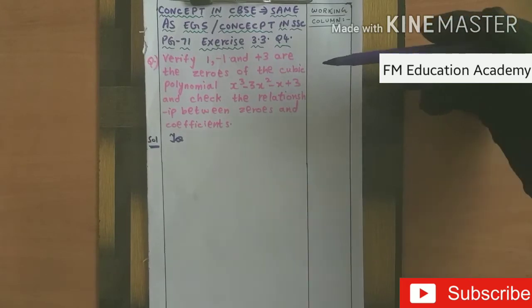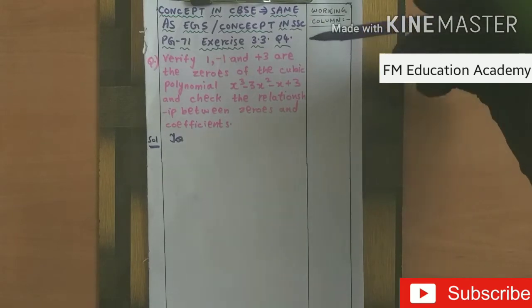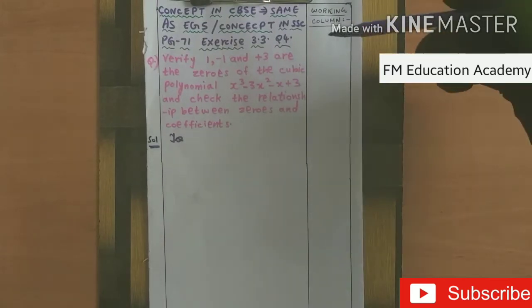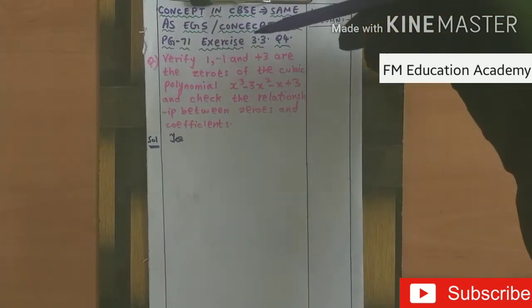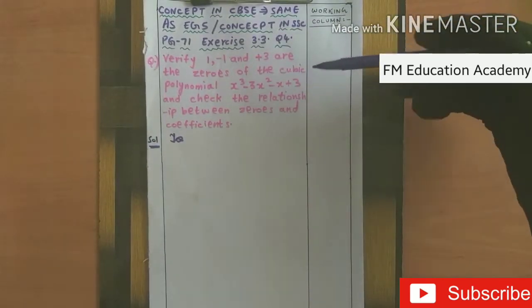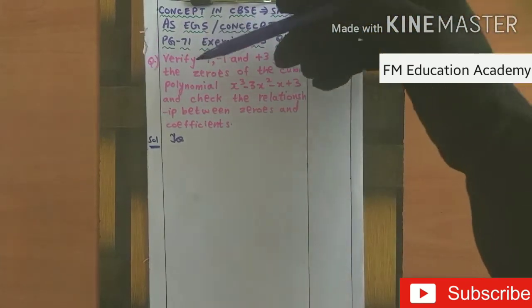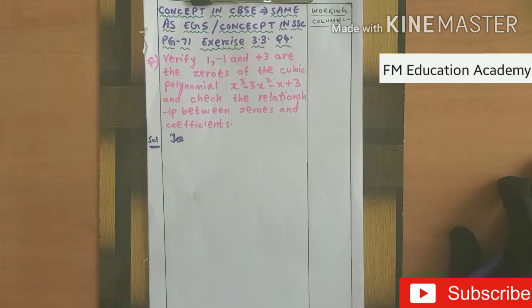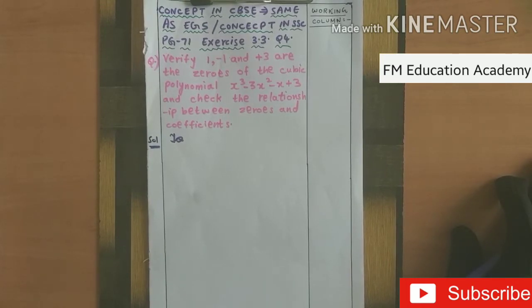When you have to find out zeros of a cubic polynomial, you equate the polynomial to zero. But here the polynomial and zeros are already given. If the polynomial and zeros are given, to check whether these are zeros, substitute the value — for example, substitute 1 in place of x and check whether the equation becomes zero. If the equation becomes zero, then 1 is a zero of this polynomial. Similarly, follow the same for the remaining values. When they are zeros they will be equal to zero — that is the meaning of zeros, or roots.